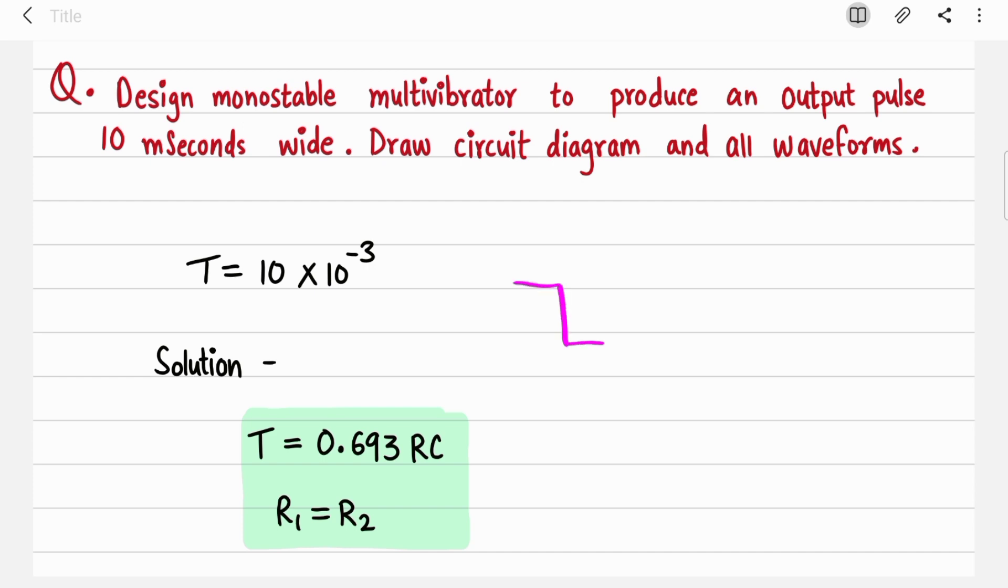As you know, monostable multivibrator produces an output pulse when you apply a negative trigger pulse. We have already seen the working in detail. Now the time period of this pulse is 10 milliseconds in the question, but in the exam they can give you any value - 20 milliseconds, 30 milliseconds - that doesn't matter. Steps will remain the same.